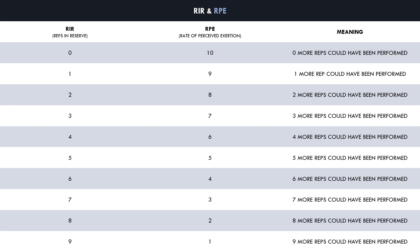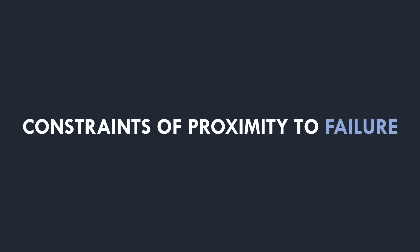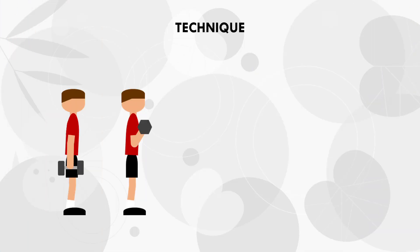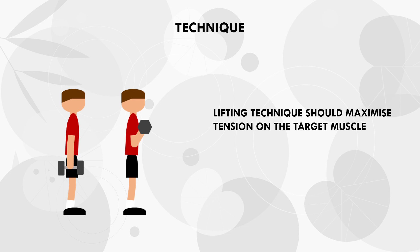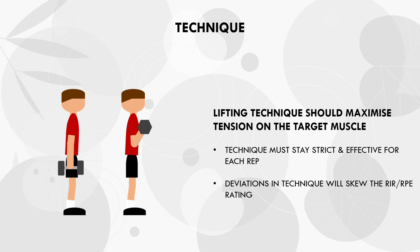For hypertrophy training, proximity to failure should be defined within specific constraints. The first constraint is lifting technique. To maximise muscle growth, trainees should lift with technique that maximises tension on the target muscle, ensuring the target muscle is the limiting factor rather than any other system. When a set is taken close to failure, technique should not deviate from the strict standardised form used from the first repetition. Sloppy technique towards the end of a set can skew the proximity to failure rating and provide false information about progression over time.